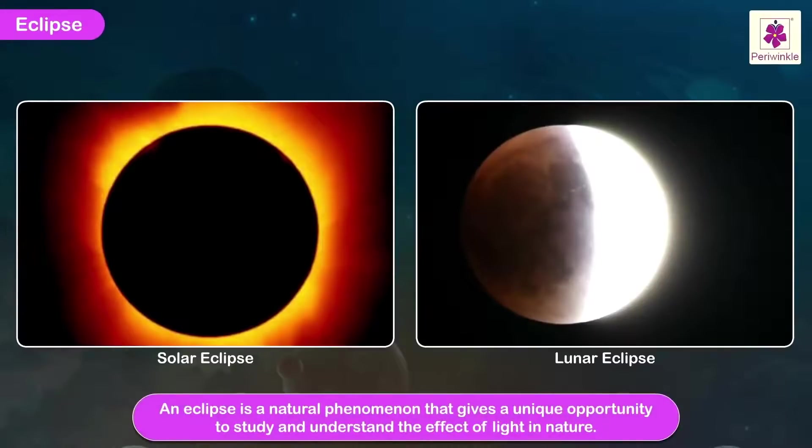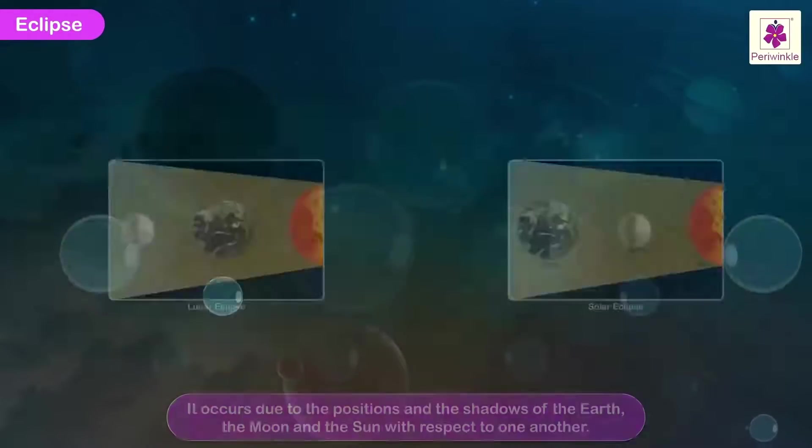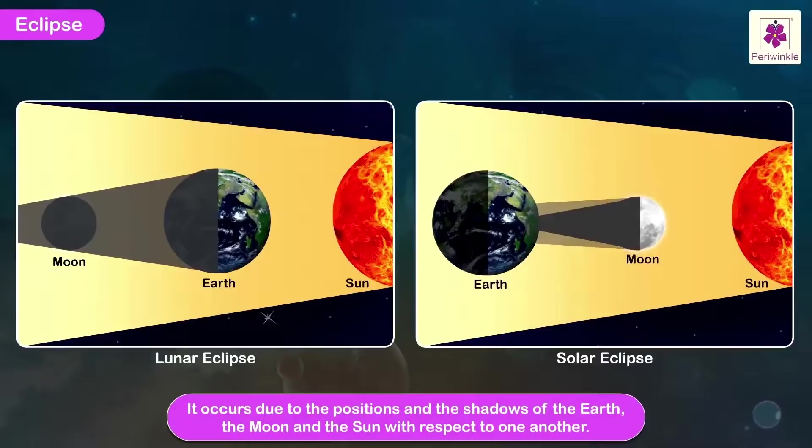Eclipse. An eclipse is a natural phenomenon that gives a unique opportunity to study and understand the effect of light in nature. It occurs due to the positions and the shadows of the Earth, the Moon and the Sun with respect to one another.